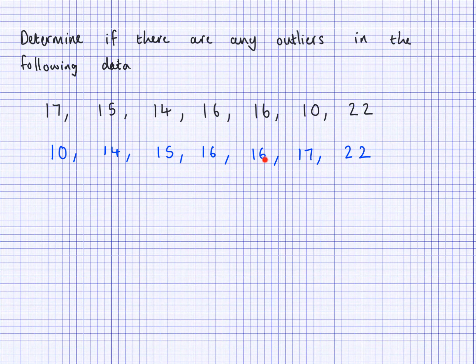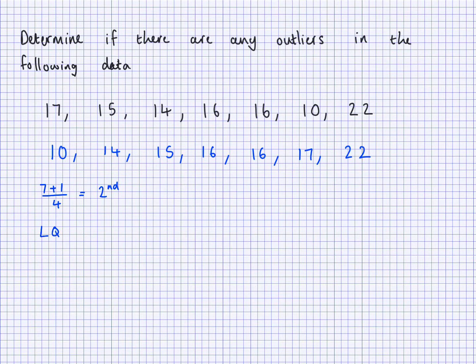I have 7 data values here. The middle one must be the fourth one, so the median is 16. To find the position of the lower quartile, I do 7 add 1 divided by 4 — that's 8 divided by 4, which is the second position. So the lower quartile is in the second position, and I have 14 in that position.